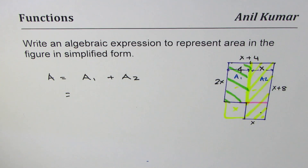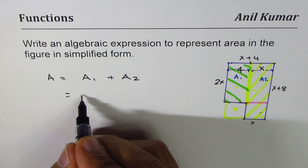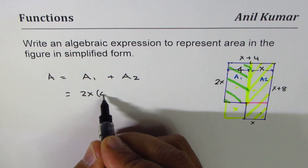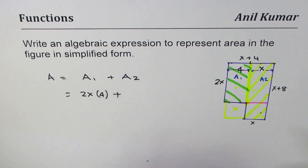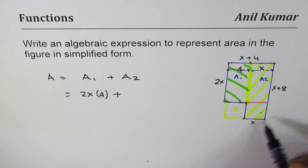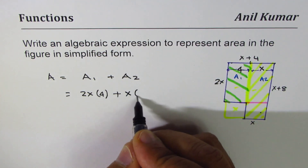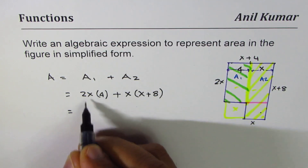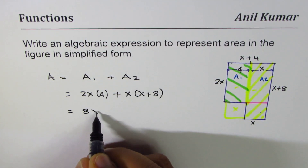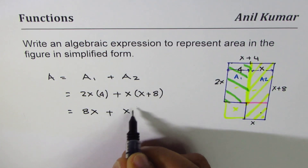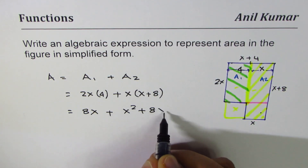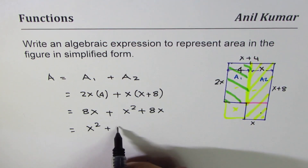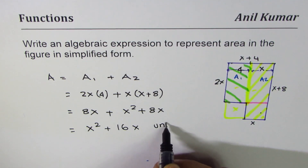So for A1, the area is 2x times 4. For A2, the area is x times (x plus 8). Expanding: we get 8x plus x squared plus 8x, which gives us x squared plus 16x square units.